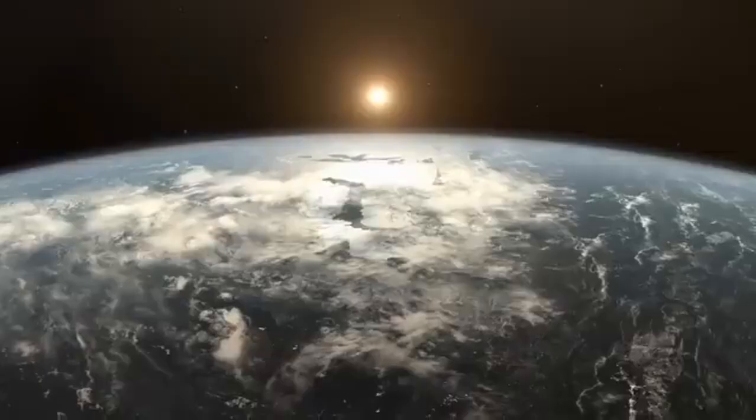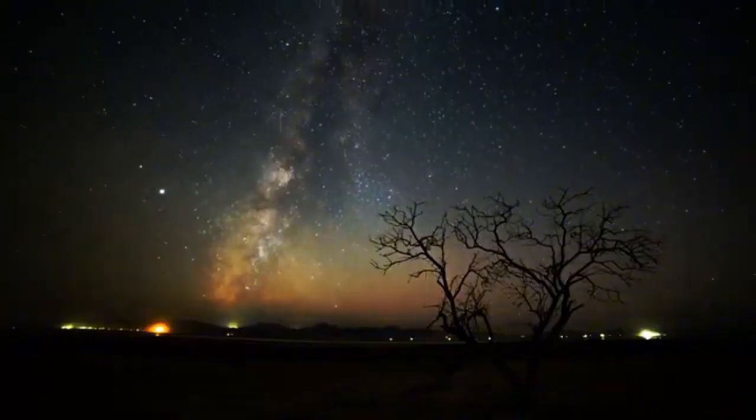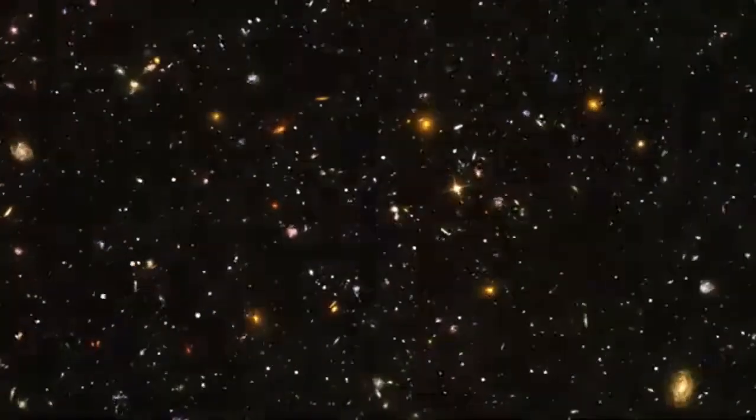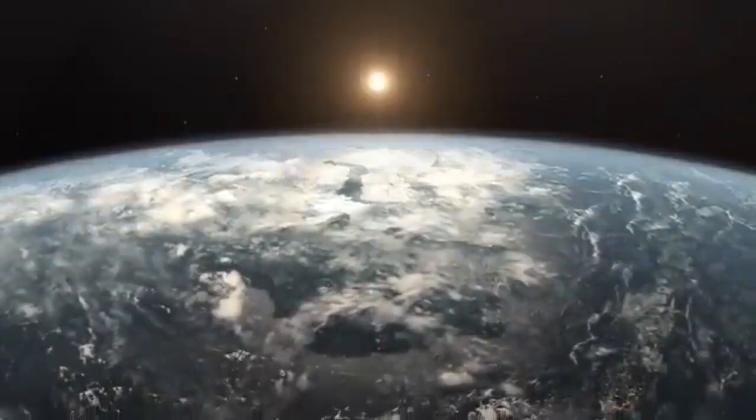This extraordinary planet not only surpasses previous records in size, but also orbits two of the most extreme and deadly stars known. Jupiter, the largest planet in our solar system, is dwarfed by B. Centauri b, which is more than 10 times its size.